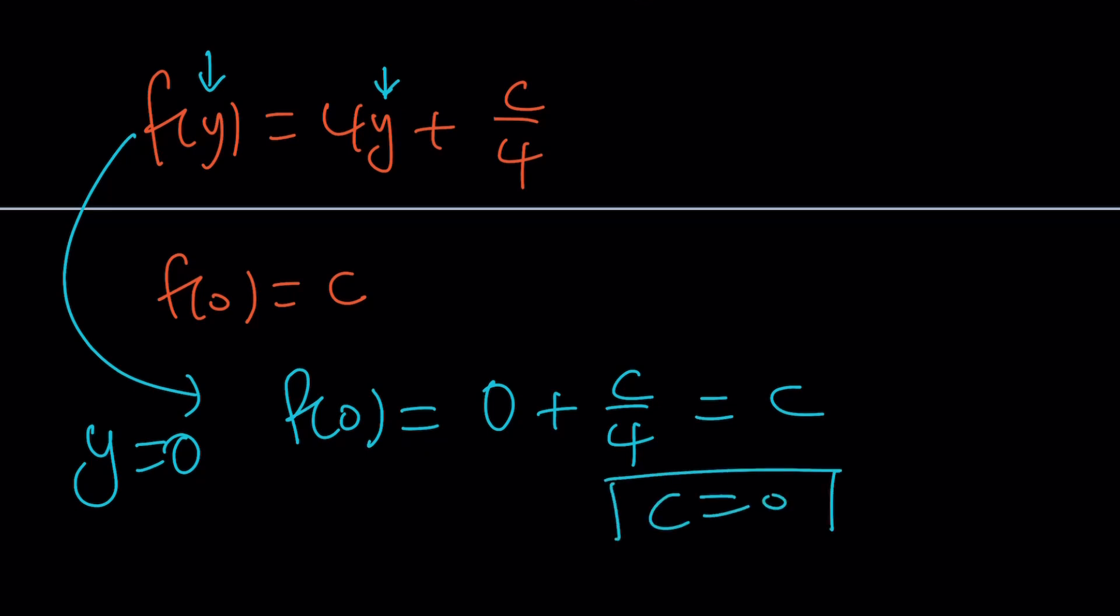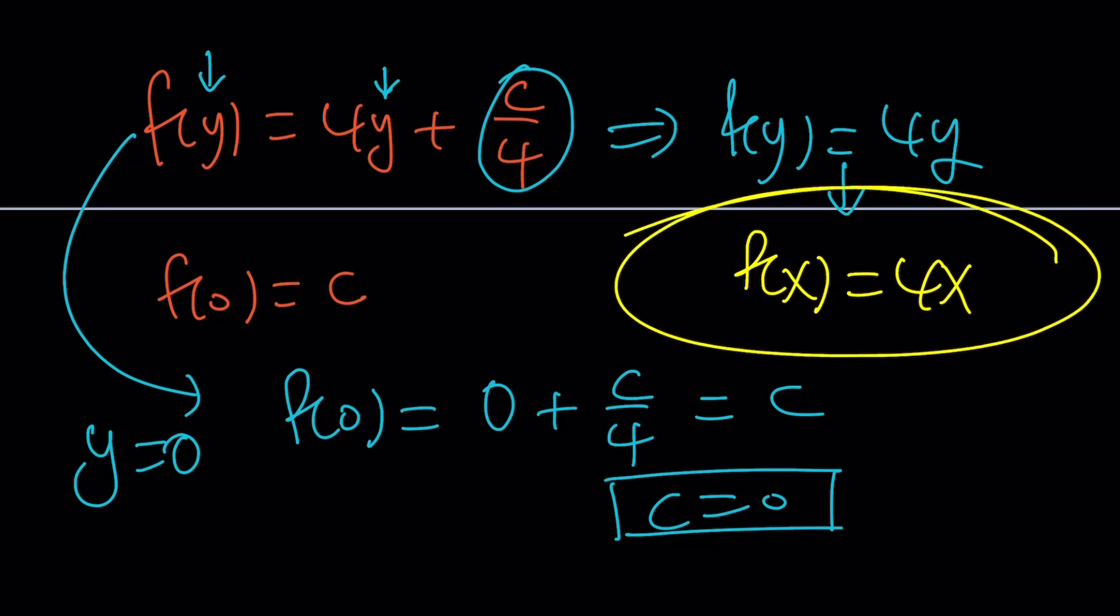Which means we can go back here. And, that's going to give us f(y) = 4y because c is 0. And, this definitely implies that f(x) = 4x as before. And, this brings us to the end of this video. Thank you for watching. I hope you enjoyed it. Please let me know. Don't forget to comment, like, and subscribe. I'll see you next time with another video. Until then, be safe, take care, and bye-bye.